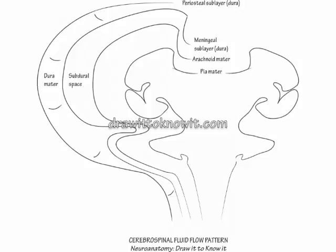Now draw the pia mater as the layer directly overlying the nervous system parenchyma. Between it and the arachnoid mater, label the subarachnoid space.